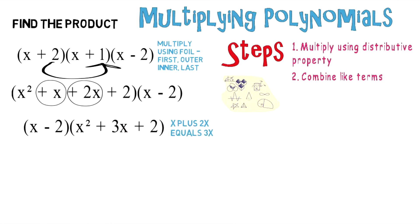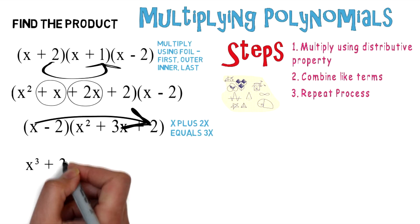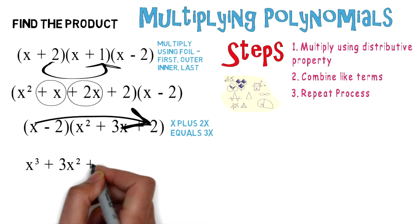Now we're going to our third and final step, which is to repeat the process of multiplying everything out. We're going to start with x: x times x², x times 3x, and x times 2, which gives you x³ + 3x² + 2x.